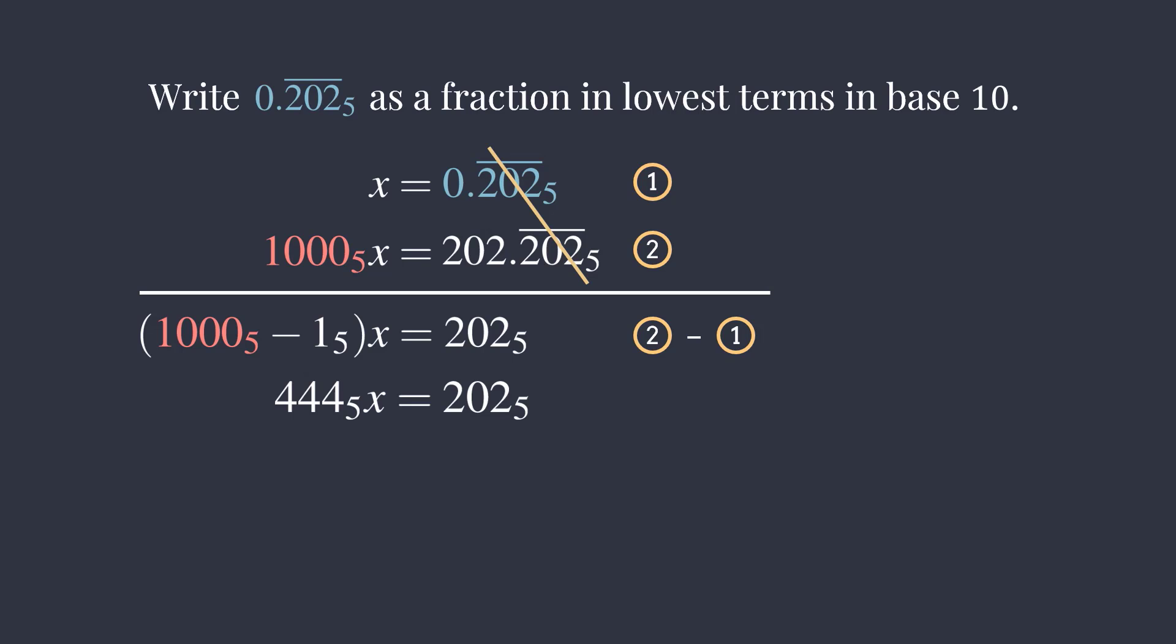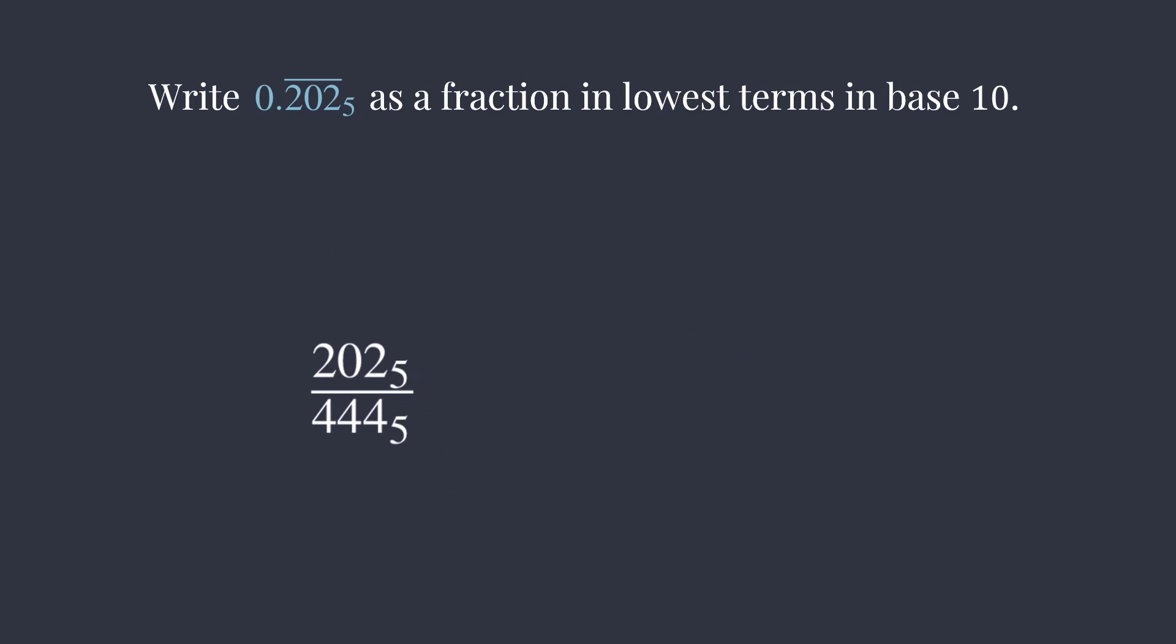Now, we are ready to isolate the x, which will give us the fraction 202 base 5 divided by 444 base 5. The rest is simply converting the fraction into base 10.